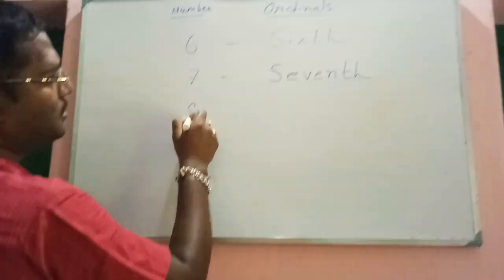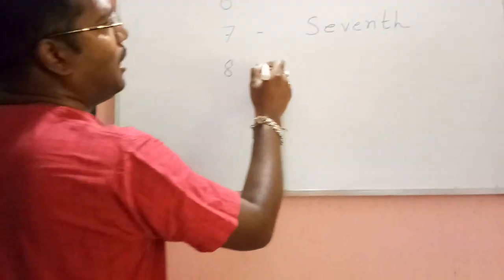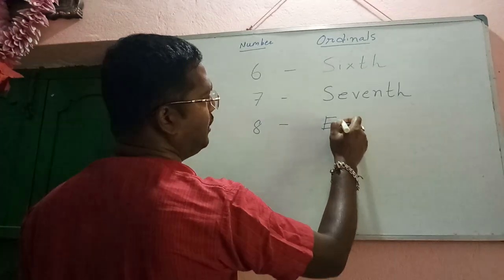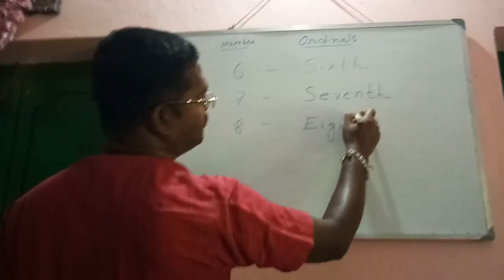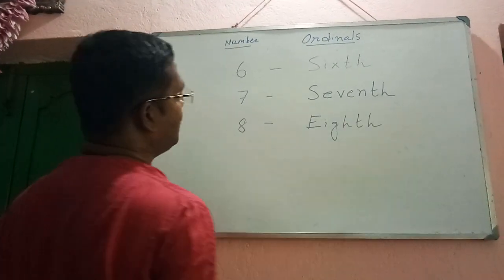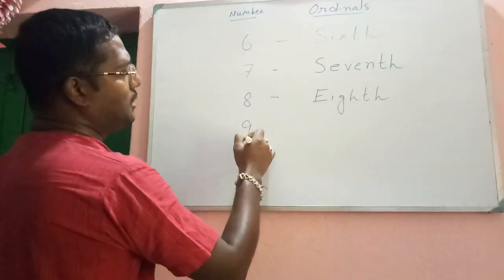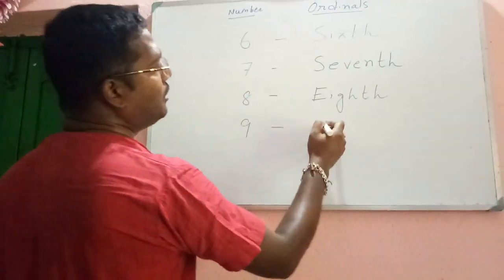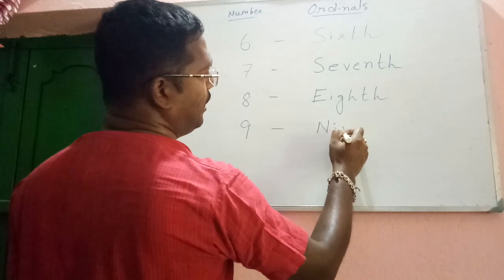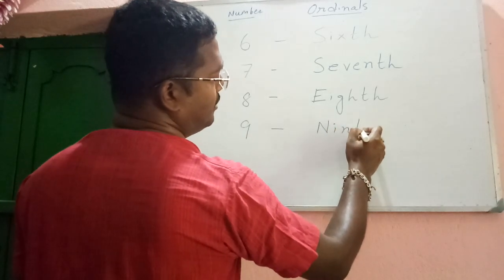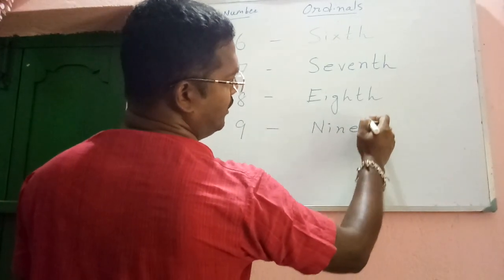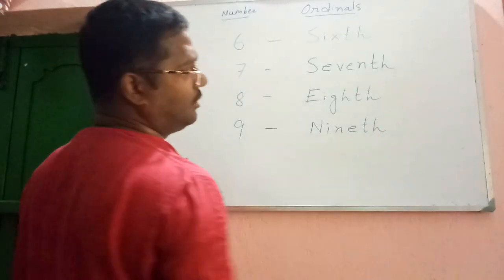Number is eight and ordinal will be eighth — E-I-G-H-T-H. Next, number is nine and ordinal will be ninth — N-I-N-T-H. Ninth.